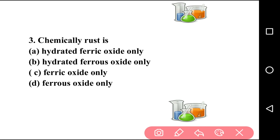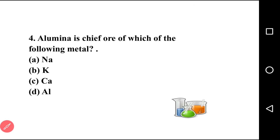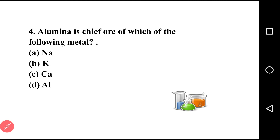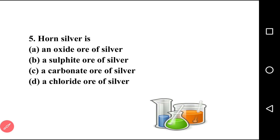Going to next question. Question number four: alumina is a ore of which of the following metal? Alumina is one type of ore — which element does it contain? There are four options: sodium, potassium, calcium, aluminium. The right answer is option D, that is aluminium. Alumina mainly contains aluminium.